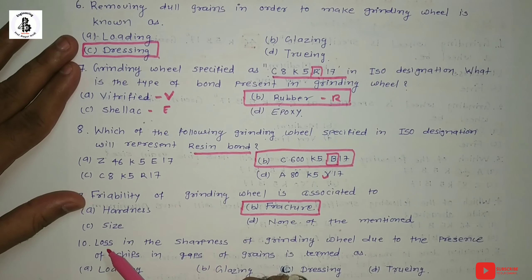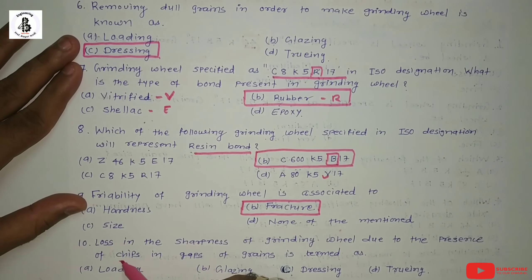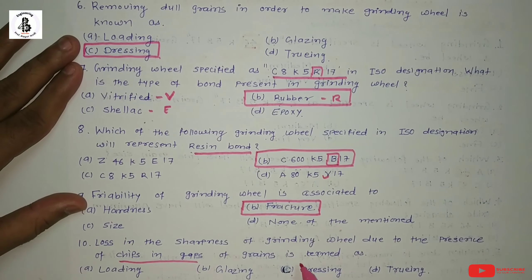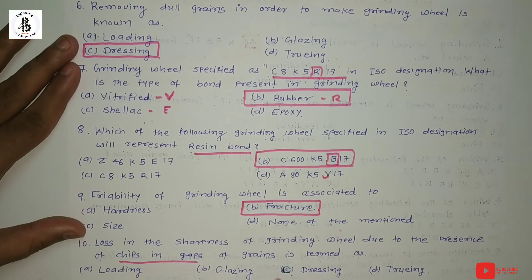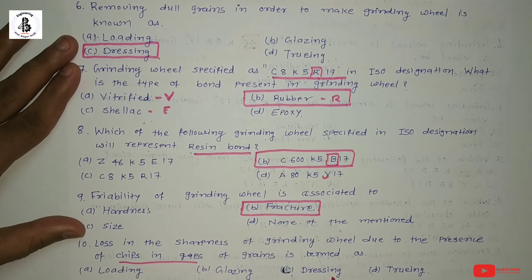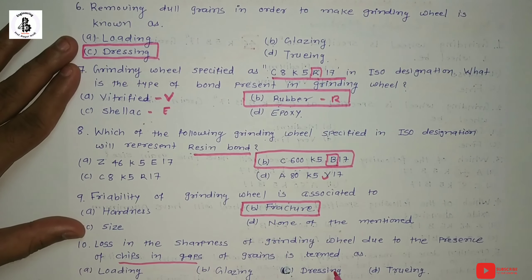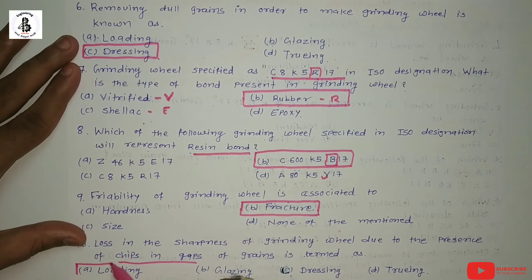Question 10: Loss in the sharpness of a grinding wheel due to the presence of chips in the gaps of the grains is termed as: Option A: loading, Option B: glazing, Option C: truing, Option D: dressing. Truing restores the shape, dressing removes dull grains, but clogging of chips in the gaps causing loss of sharpness is known as loading — so the answer is option A: loading.